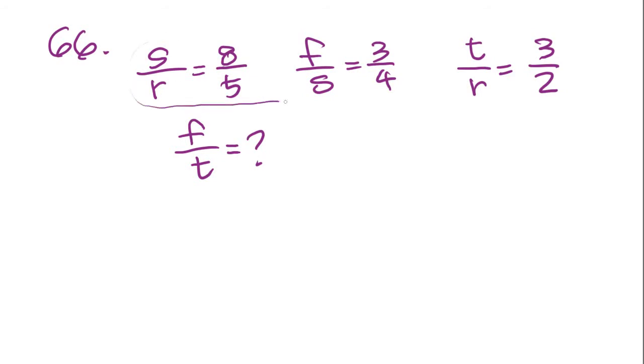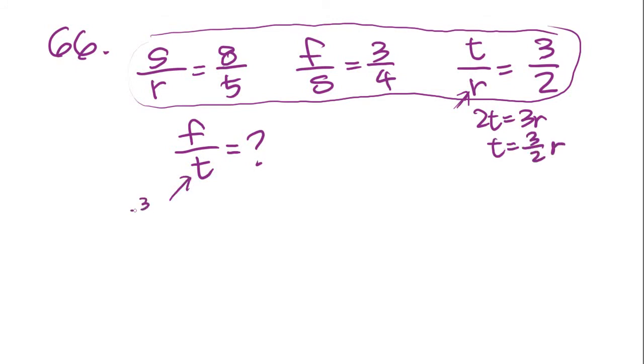To solve this problem, we're gonna have to figure out both F and T by combining these three equations in very creative ways. What I like to do is find one variable that doesn't appear here and set both F and T equal to that variable. In this case, I'm going to use R. So let's find out what the relationship between T and R is. Cross multiply, you get 2T equals 3R, and then you get T equals 3/2R.